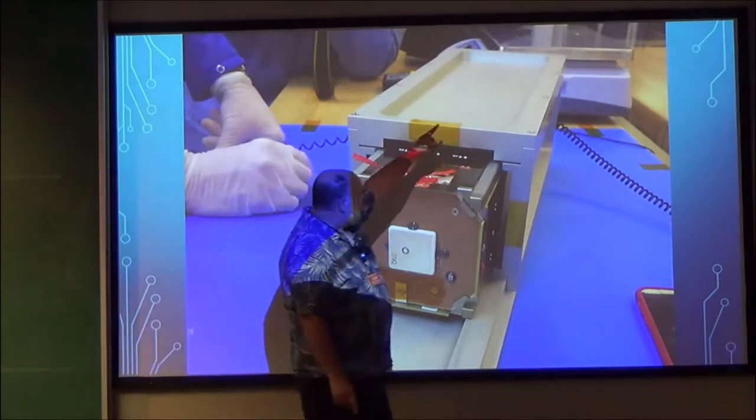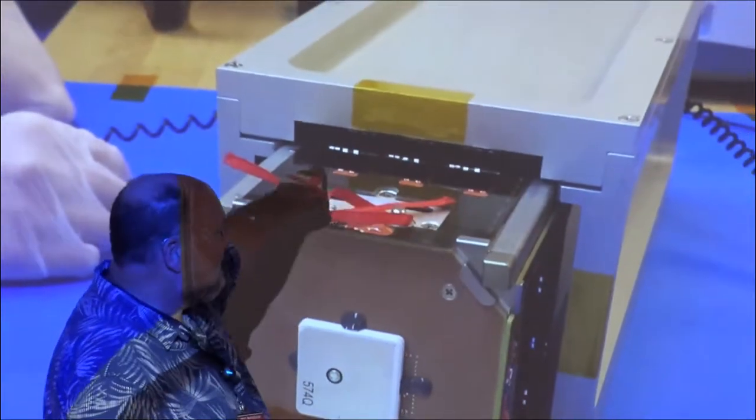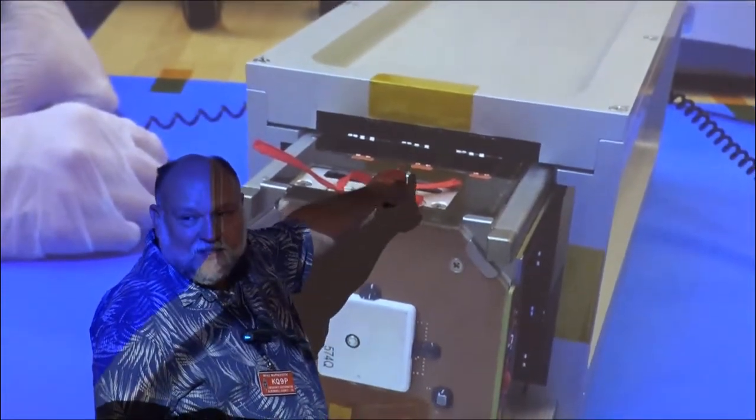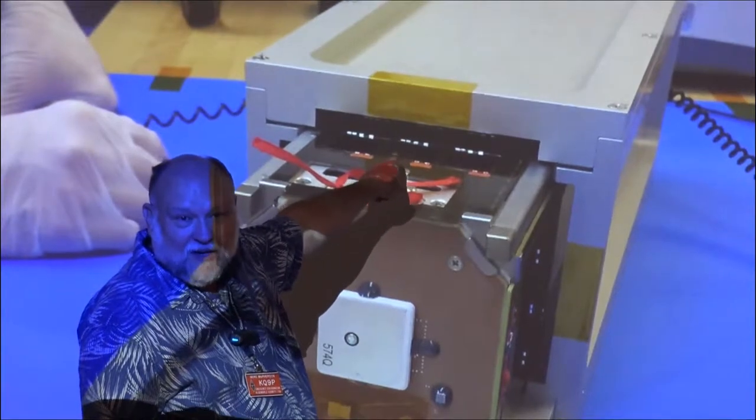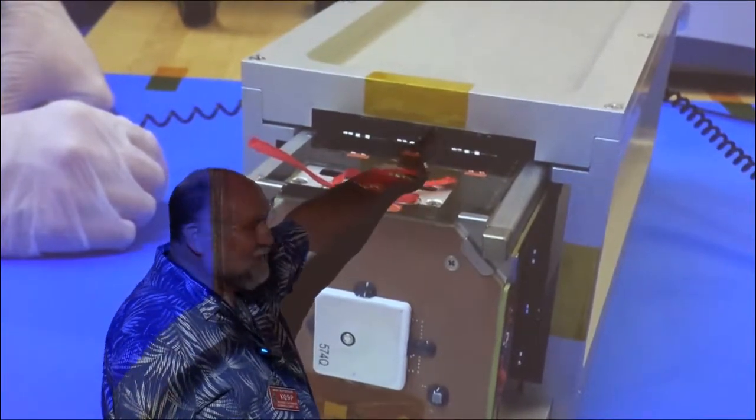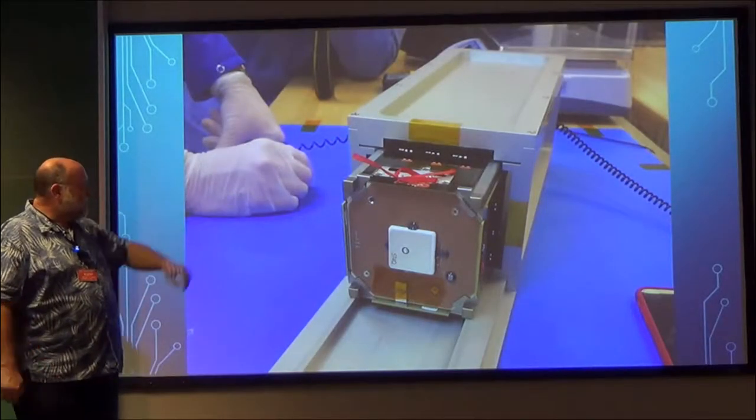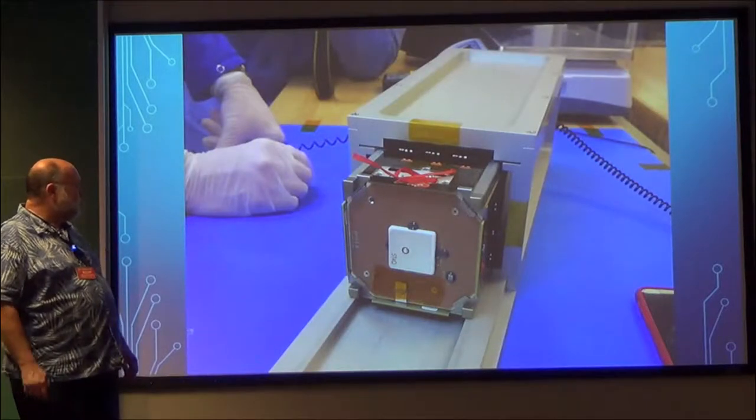They all involve being put into what amounts to a tube with a spring at one end and a door at the other. This is not actually the deployer. This is the thing at the airport that you put your carry-on luggage in to make sure that it fits. You have to slide it in here first. I'll show you a picture of the dispenser in a minute. But this is the UVA CubeSat, ready to go.